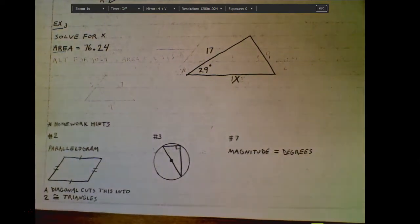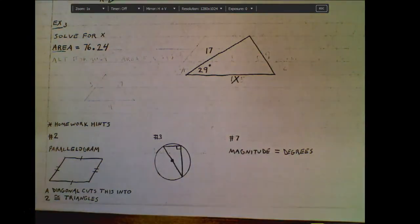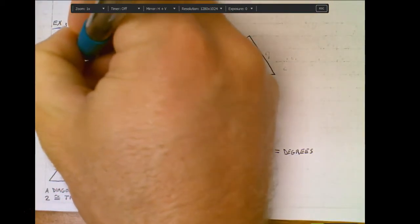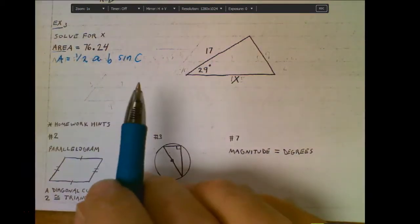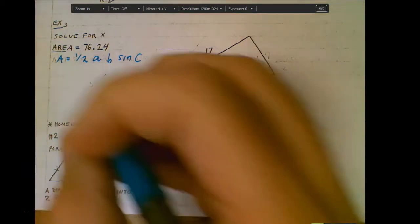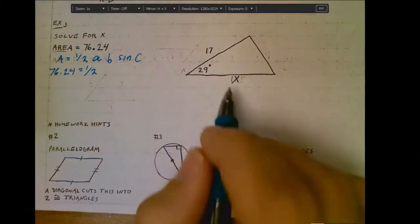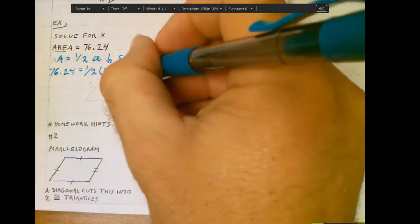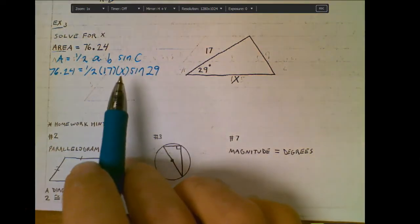All right, last example. For example three, notice in this case, we now know the area and they are asking me for a side length. So in this case, I can use the same formula. Let me just write it down so we can see what gets plugged in here. So I know that the area is equal to, again, one-half A times B sine C. So that's the formula. Let's just plug in some information. We know the area is 76.24. So 76.24 can go in for A. The two side lengths that we're working with are 17 and X. And the sine of, in this case, 29 degrees. So just like any formula, you plug in everything that you do know and you solve for the one missing piece that we don't have.